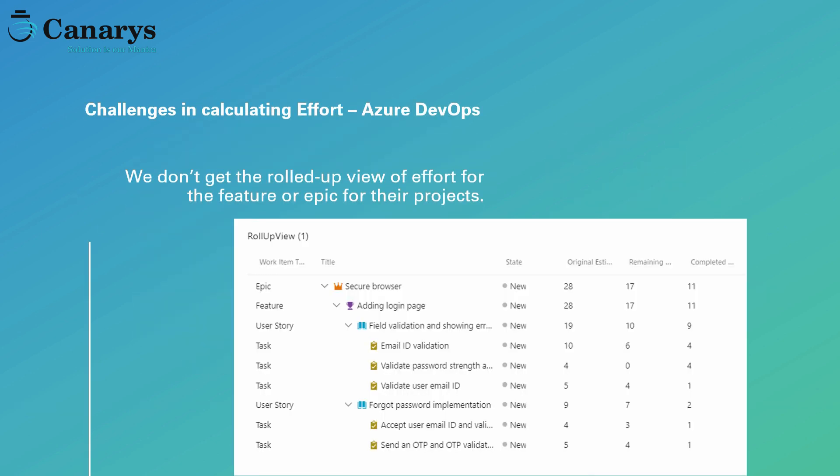One of the challenges that we have seen with customers using Azure DevOps, and mostly the managers and delivery heads, is not getting a rolled-up view of effort for the feature or epic for their projects. Even though we could track the efforts at the task level in Azure DevOps, the same is not available at higher level of work items.